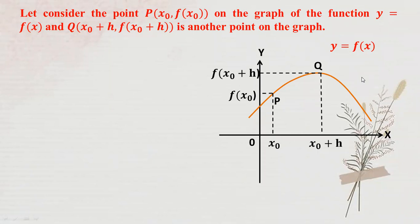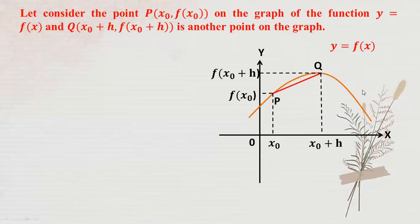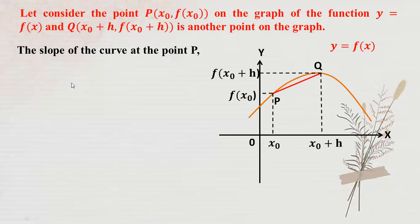Then you can see the effect - the derivative of the function. The tangent line at P and Q forms a straight line. The slope of the curve at point P, using the slope of line PQ, we can use the slope to find the change.